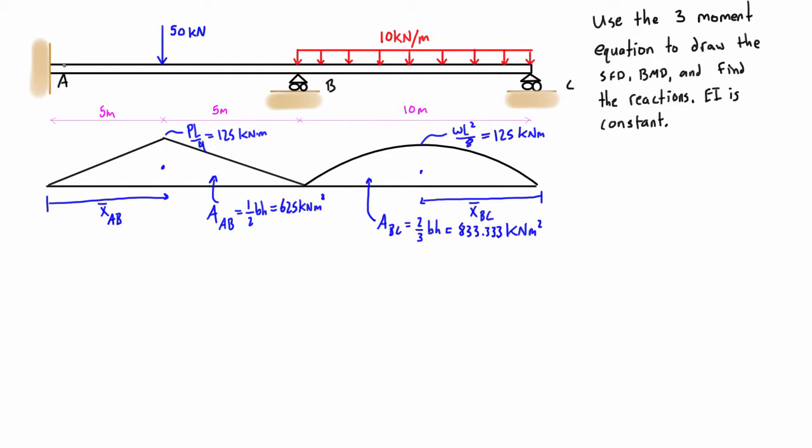If we think about what the three-moment equation really does, it compares the internal moments—like three internal moments across two spans. So when we think about that, the internal moments are: we're going to have MA, we're going to have MB, and we're going to have MC.